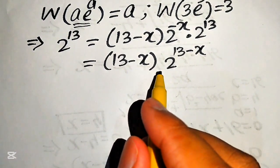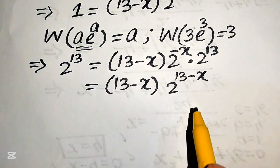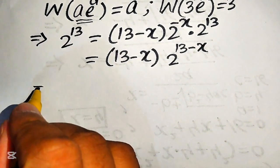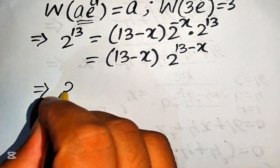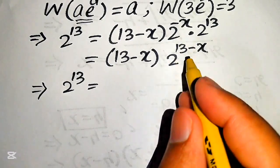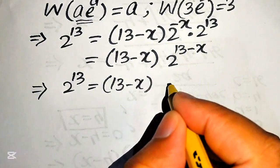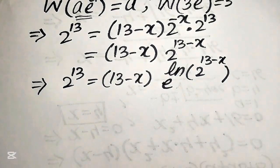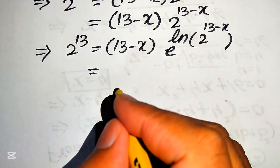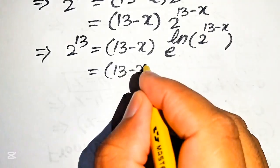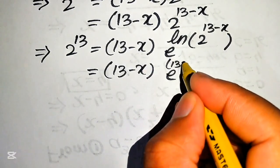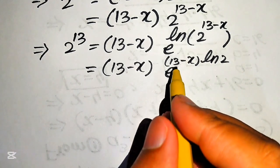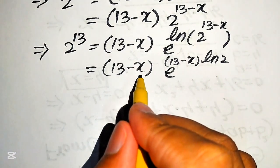The two exponents are now the same, but the Lambert W function requires base e. To convert, we apply log and antilog simultaneously, writing the expression as 13 minus x into e to the power of log of 2 to the power of 13 minus x. Applying the log power rule, this becomes 13 minus x into e to the power of 13 minus x times log 2. The exponent of e is 13 minus x times log 2, but we still need a factor of log 2 in front.